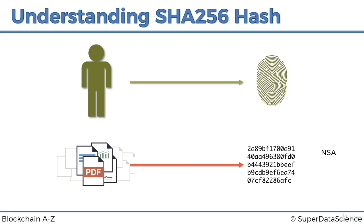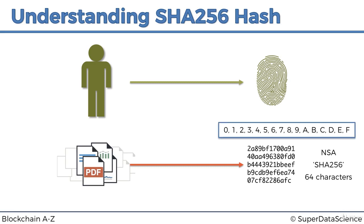This hash is called SHA-256 because SHA stands for Secure Hash Algorithm, and 256 is the number of bits it takes up in memory. The hash is always 64 characters long and consists not just of digits but also letters, because it's a hexadecimal hash — numbers from 0 to 9 and the letters A through F, giving a total of 16 possible characters.